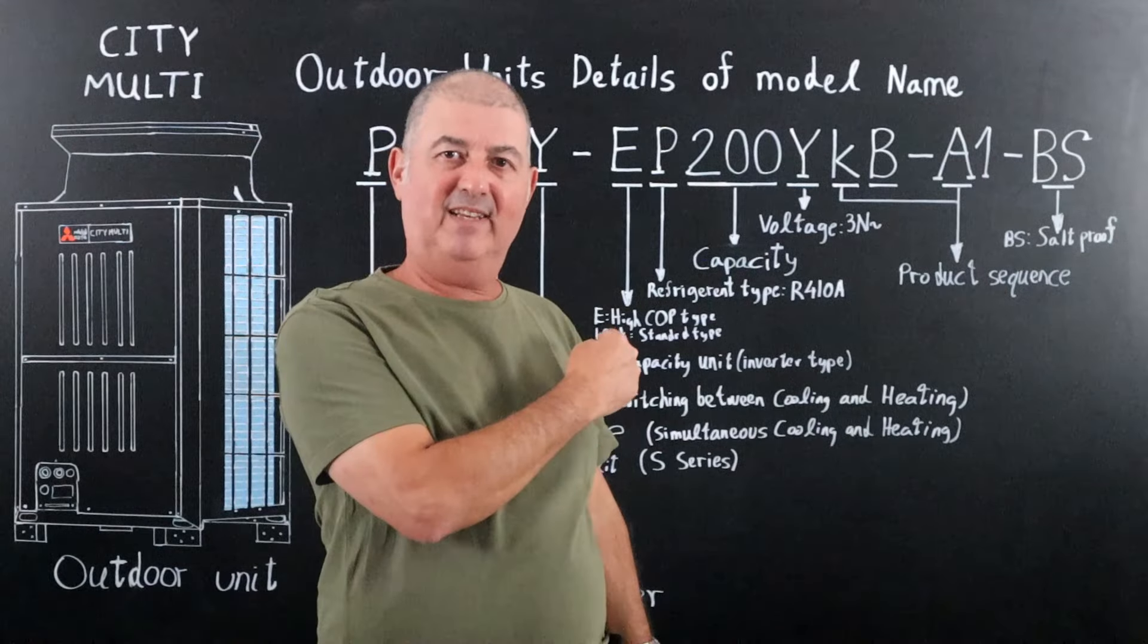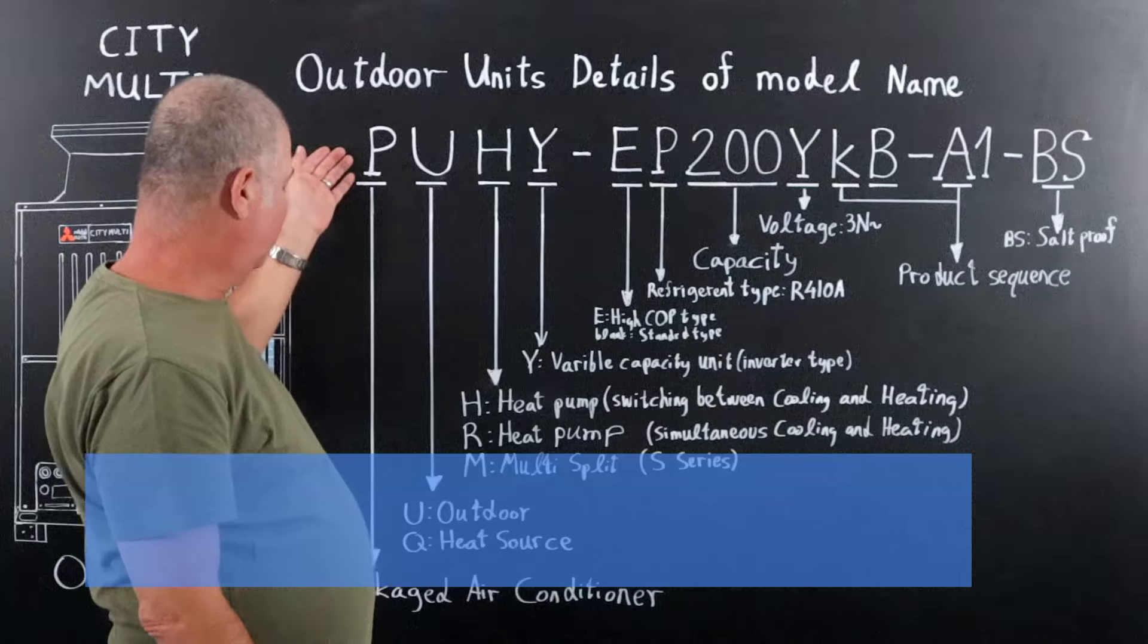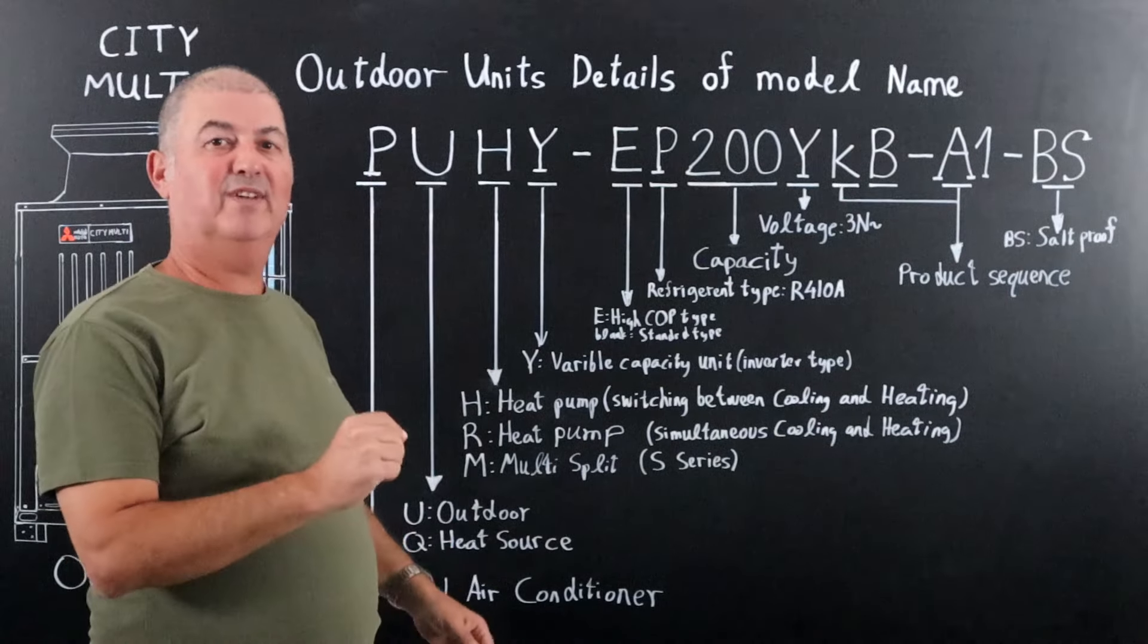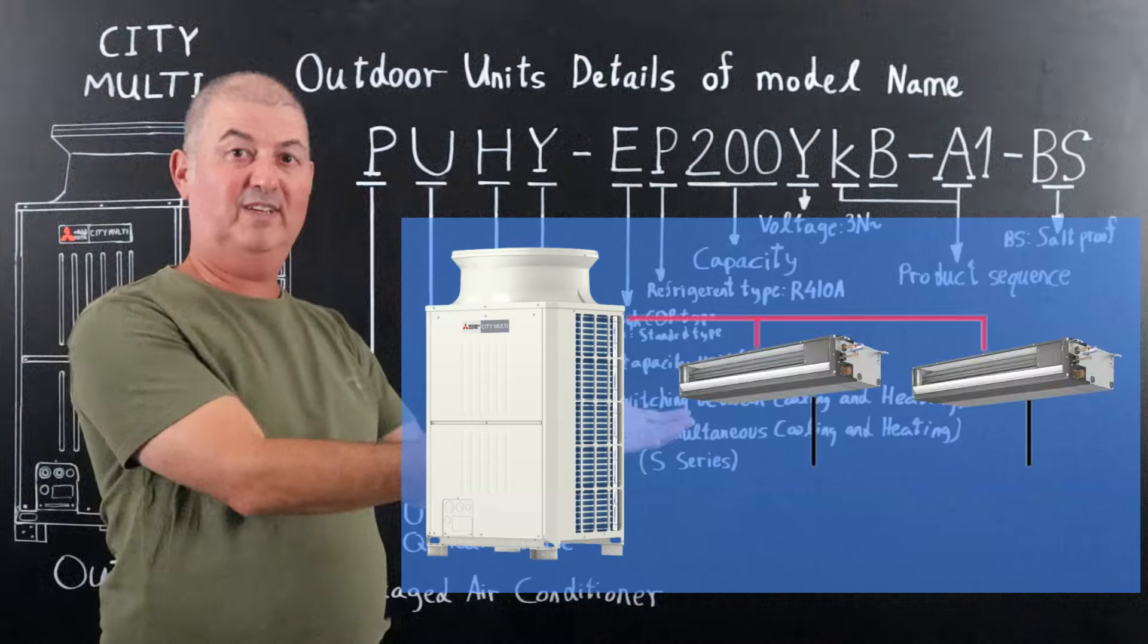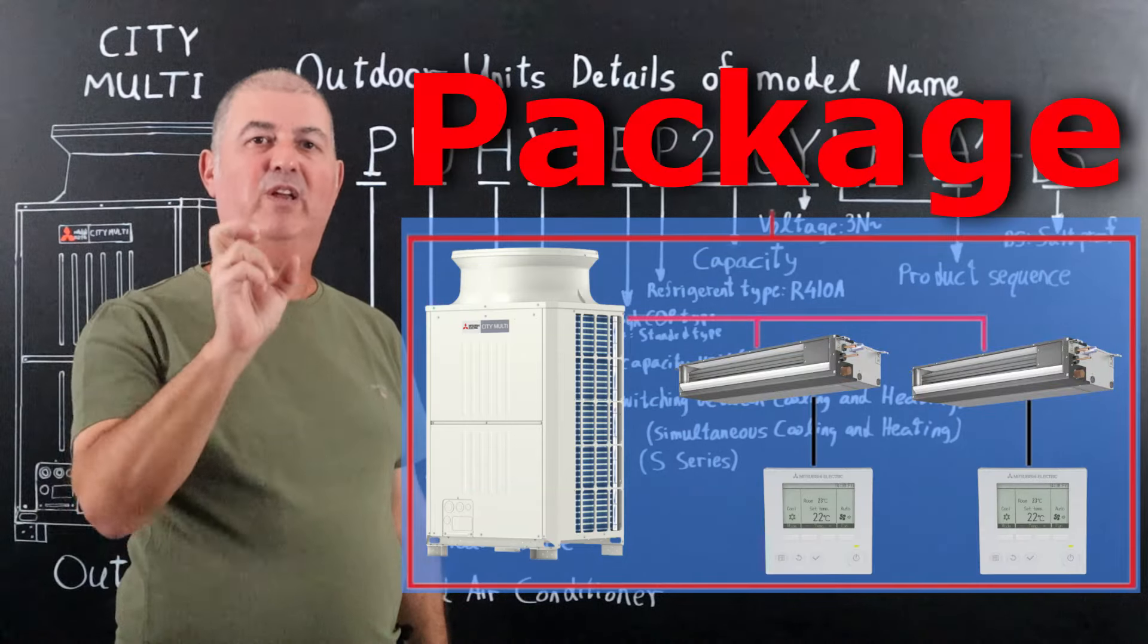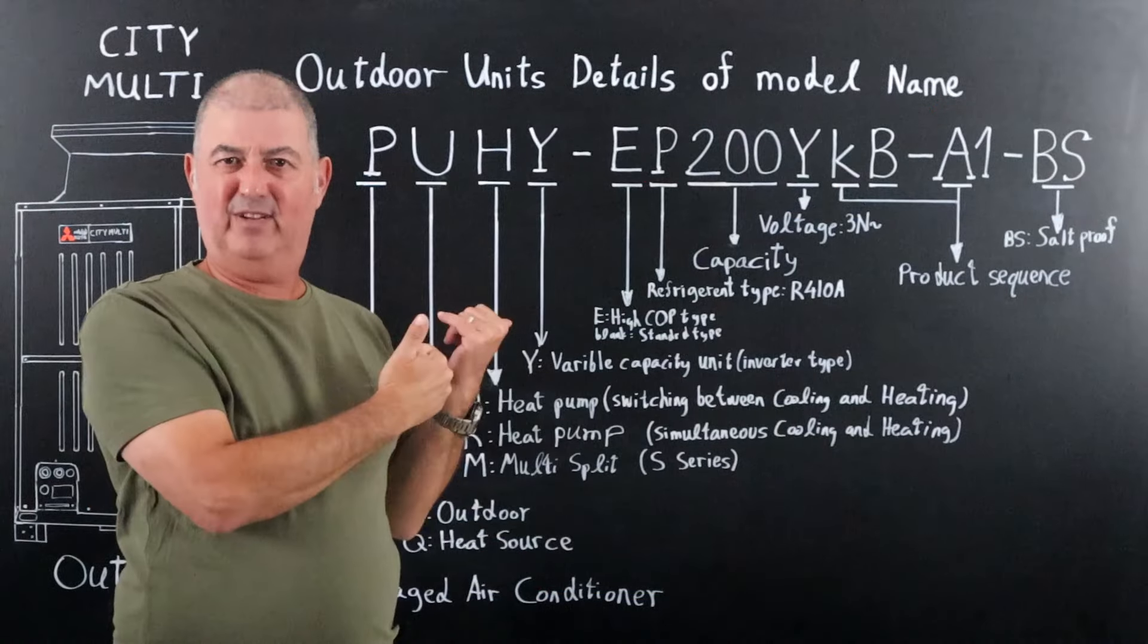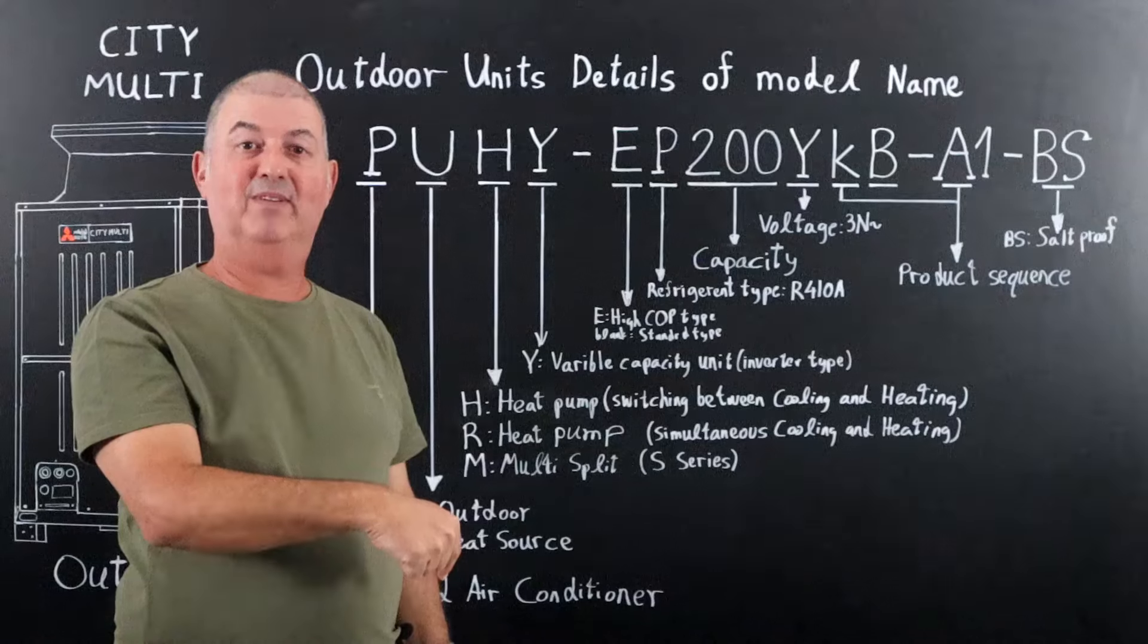Now let me explain the meaning of the characters. The first letter P is for package air conditioner, meaning that you can connect this outdoor unit with indoor units and controller as a package. So if we connect all these components, it will work as an air conditioner. Does this explanation make sense? If no, please leave me a comment below.